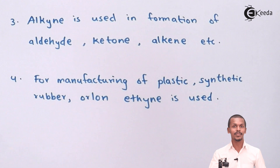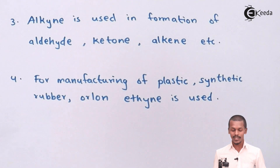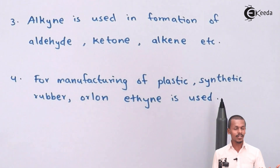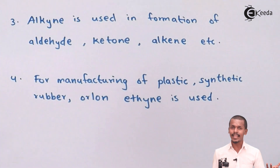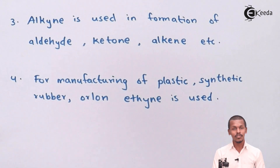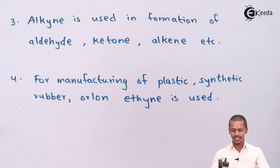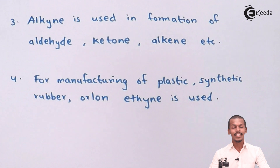Talking about the last use, acetylene is also used in the manufacturing of plastics, synthetic rubber, and materials like Arlon. So these were the uses of alkynes that we have discussed.